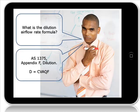Where can I find the dilution air flow rate formula? The formula can be found in AS1375 under Appendix F, called Dilution. The formula is D equals C times V times A times Q times F.